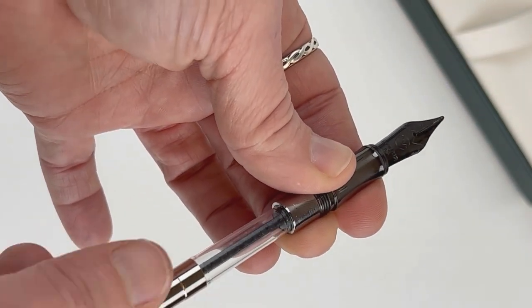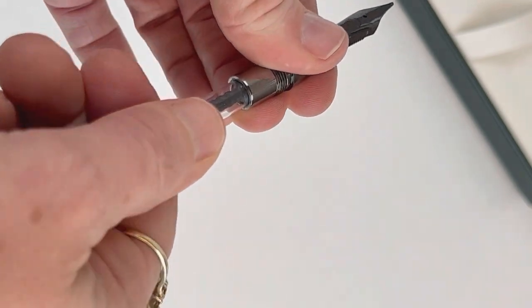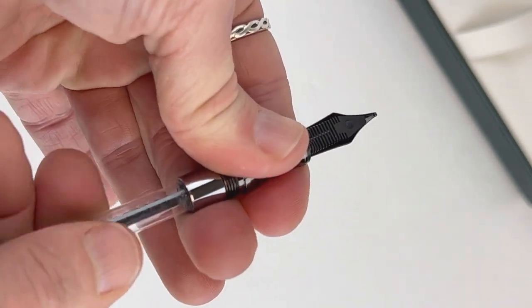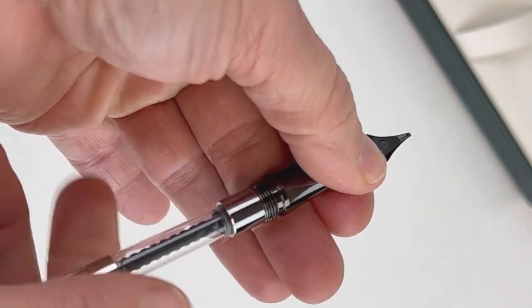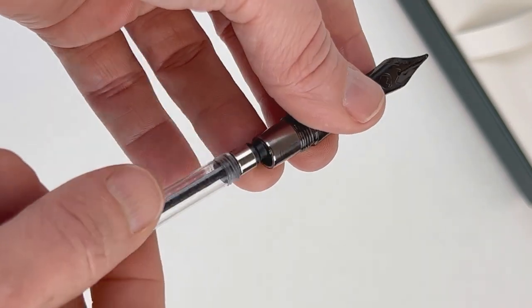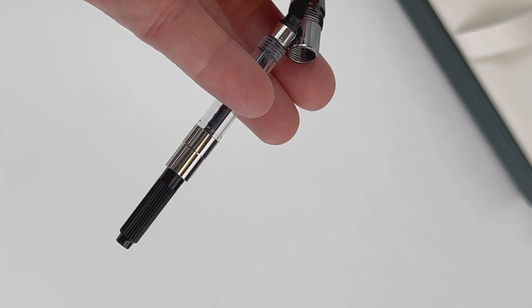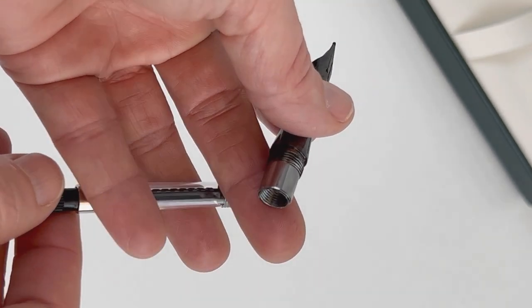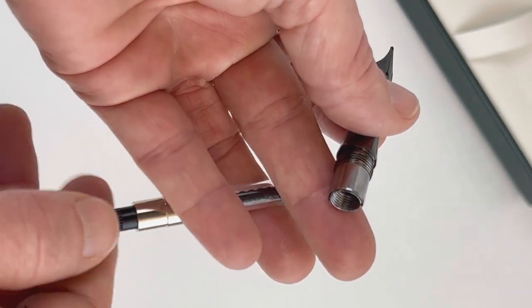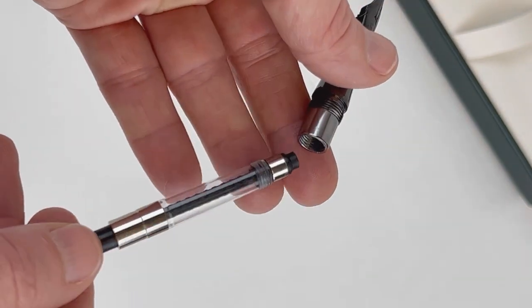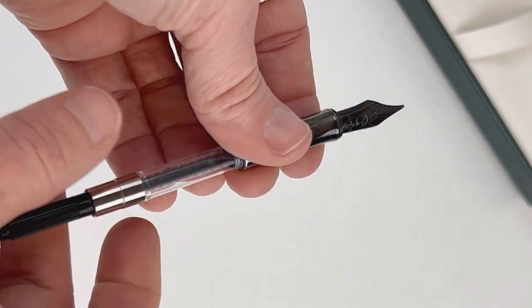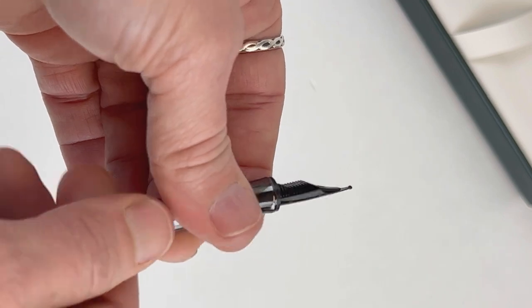If you would rather use an ink cartridge, you can remove the converter and just pop in an ink cartridge instead. And as you can see here, you do have a threaded converter with this Monteverdi Regatta fountain pen, so you want to twist that out to unscrew it instead of just trying to pull it out. This isn't a push-in converter. It's a threaded converter, so you're going to screw it in and screw it out. But the ink cartridges that you'll use will just be a push-in cartridge.